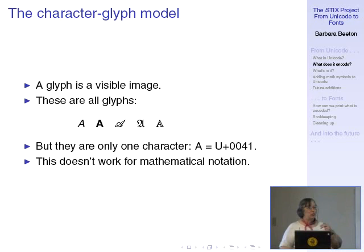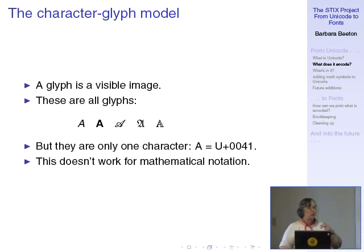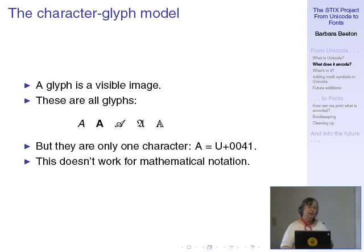What is a glyph? This is where we get into the fuzzy areas of Unicode. They claim to encode characters, not glyphs. So all your variations on A are all glyphs. According to Unicode, when we started, they were just one character — A — with the cell number hex 41. But when you get into mathematical notation, this no longer works.